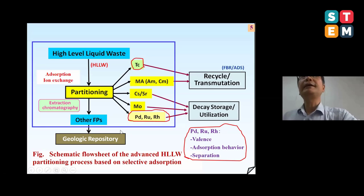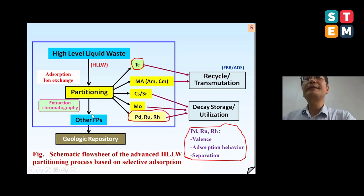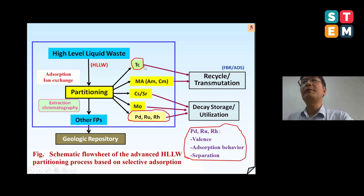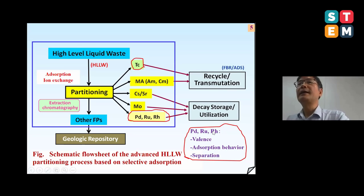To prevent such accidents and to separate and recover these noble metals from spent fuel or high-level liquid waste, we proposed an overall separation process. The high-level liquid waste contains many types of nuclides — for example, technetium, with very long half-life and very strong gamma and beta emissions — and also some very useful noble metals. In this work, we focused on the absorption and separation of the platinum-group metals.